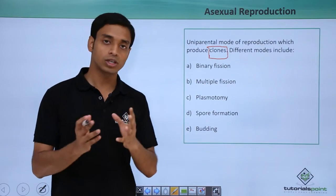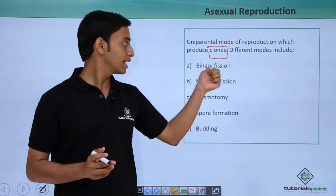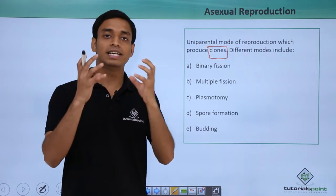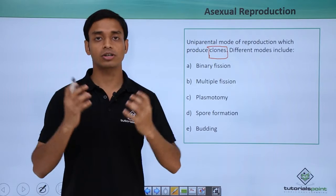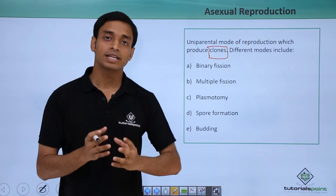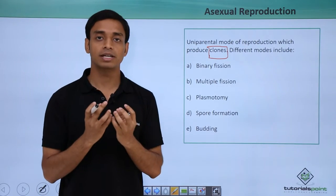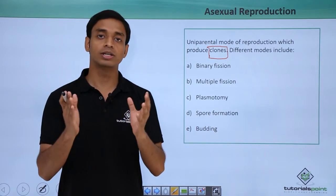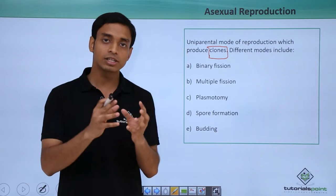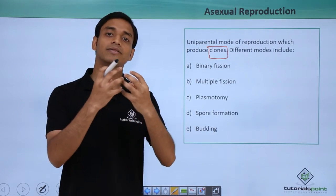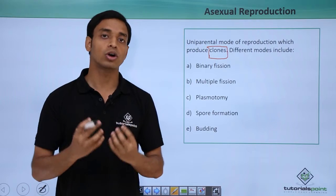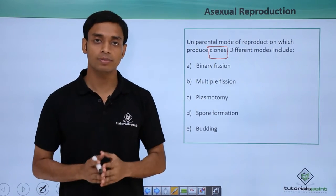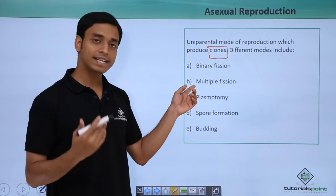Asexual reproduction can happen in different modes. First, they can divide by binary fission. Here, a parent cell divides into two equal daughter cells. The parent cell divides its nucleus and distributes its cytoplasmic content equally amongst the two daughter cells, producing two new daughter cells.